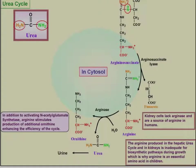Arginosucinate lyase produces arginine, an amino acid, and arginase acts upon arginine, reforming ornithine and forming urea. If you get a lot of arginine in your diet, arginase will act on it, forming excess ornithine which enhances the urea cycle. In the kidneys, arginase is absent, so arginine can be formed there in small amounts, but it's produced so slowly that arginine becomes a conditionally essential amino acid during growth or disease.